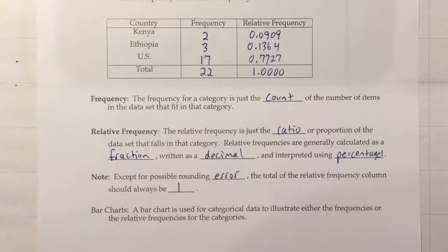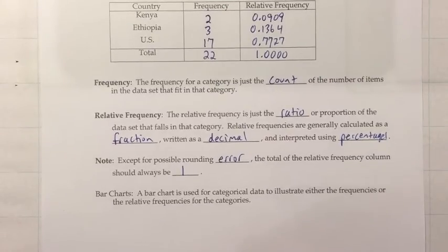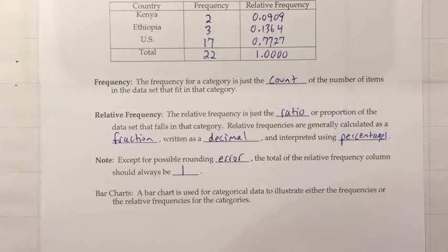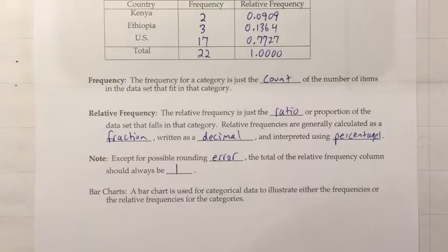That's an example of a grouped data table with frequencies and relative frequencies for categorical data. The next thing we often do once we've grouped data is create a graph, and for categorical data that's usually a bar chart. A bar chart is used for categorical data to illustrate either the frequencies or the relative frequencies for the categories.